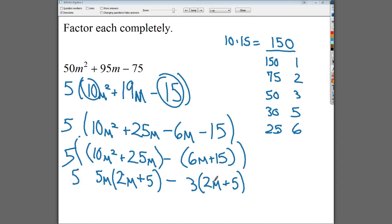Which means two M plus five and then five M minus three. And don't forget to bring down your five at the front.